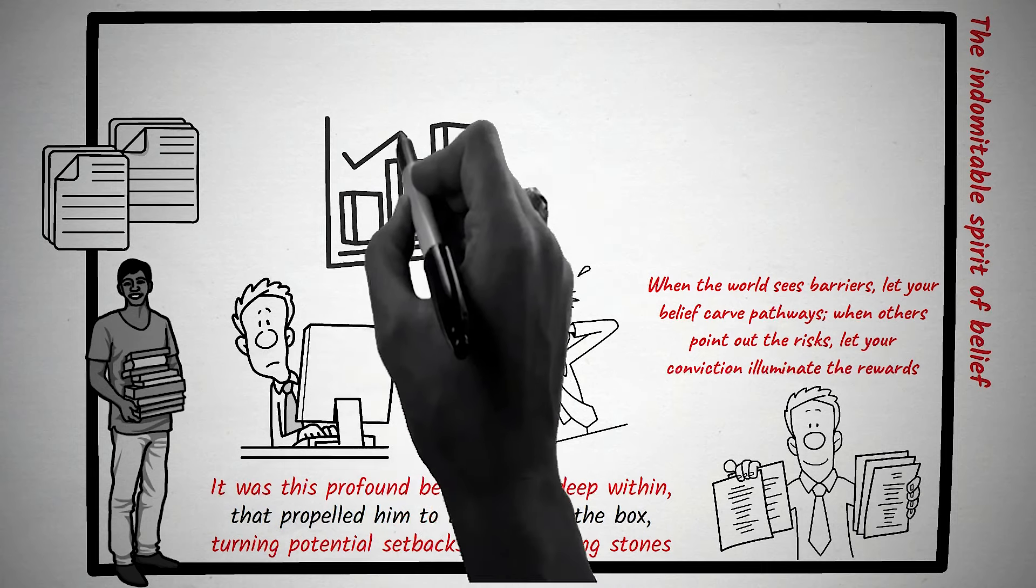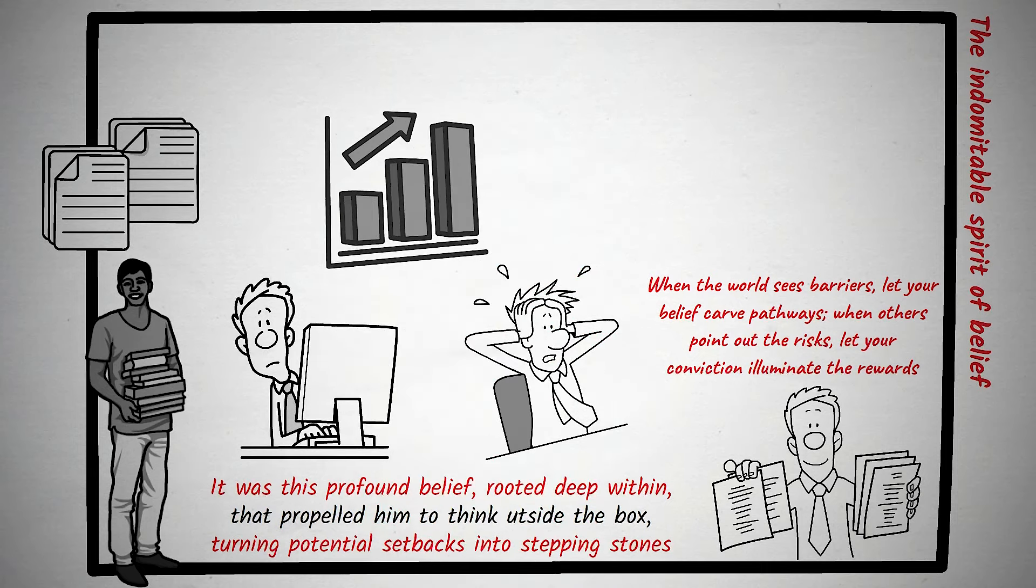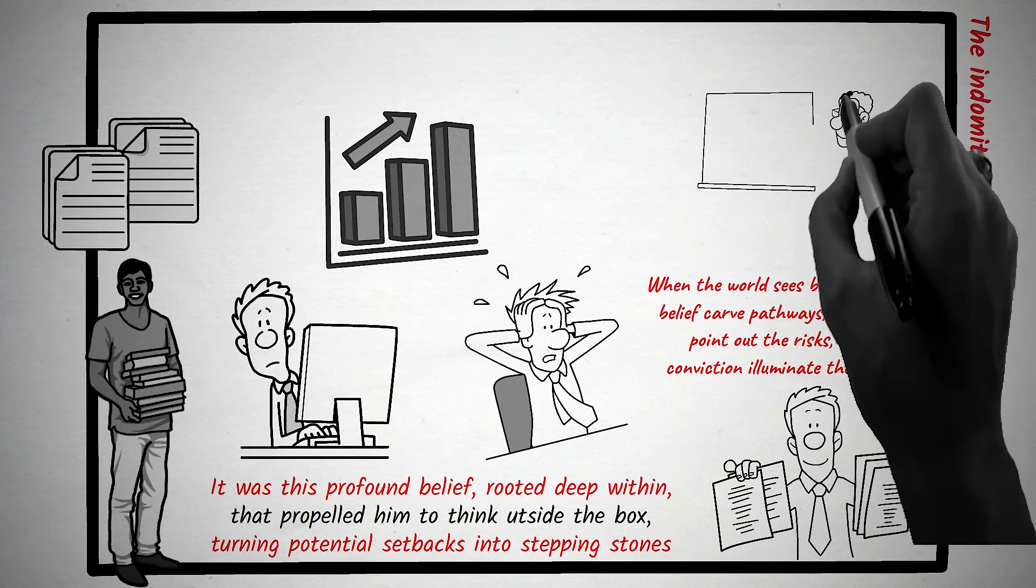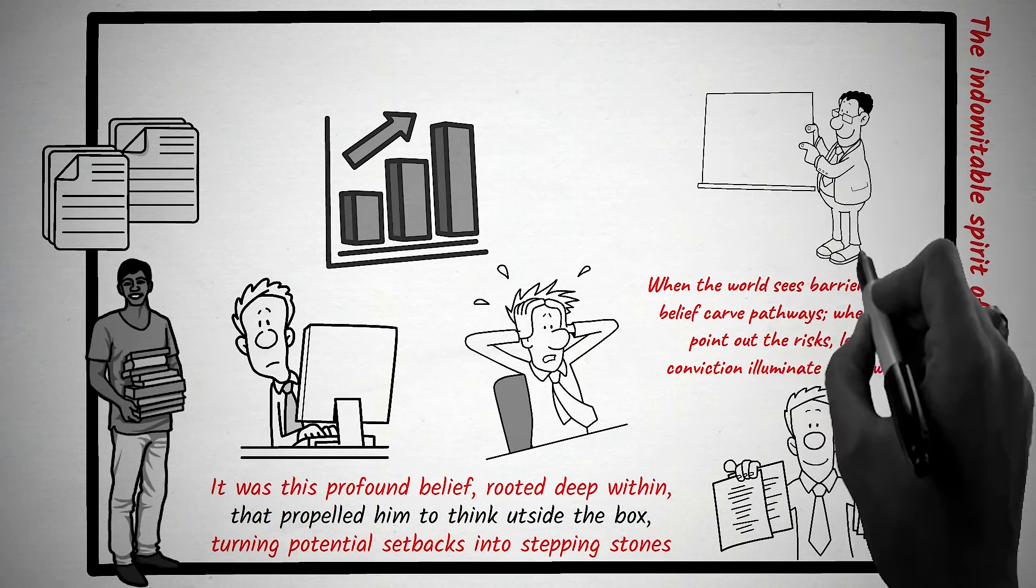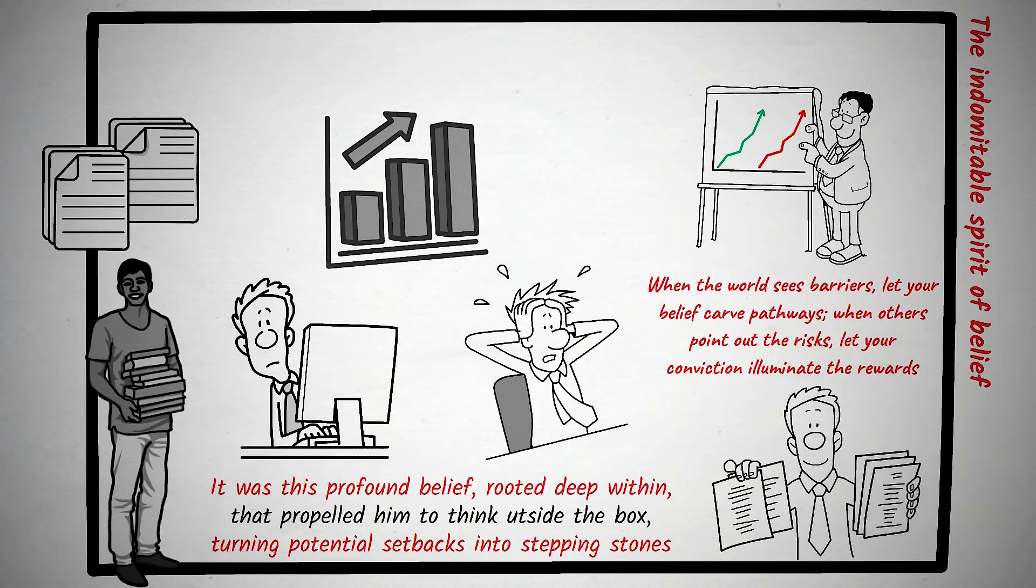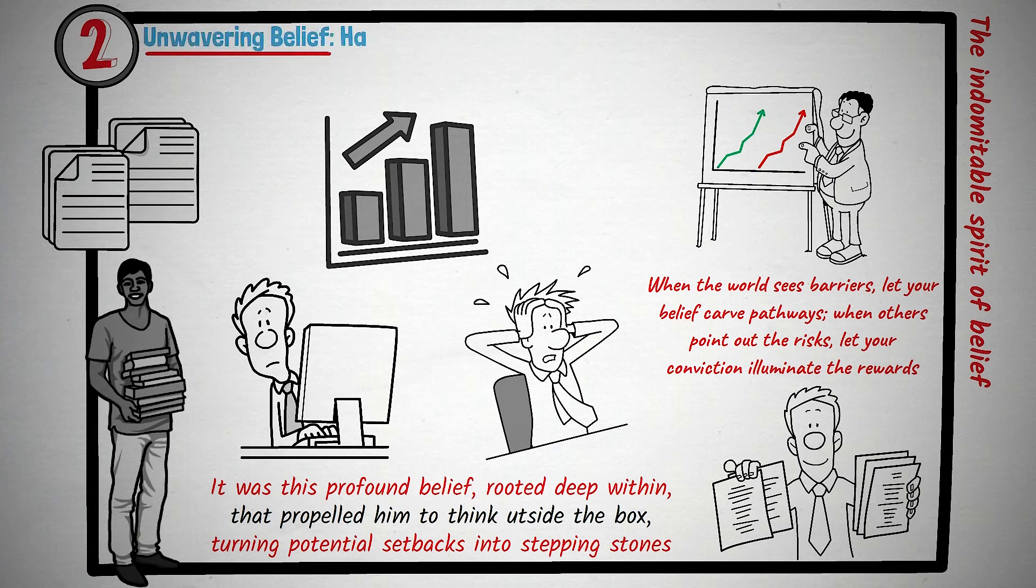As we navigate the intricacies of Think and Grow Rich, it becomes evident that the cornerstone of every success story is an unyielding belief in oneself. This isn't just about optimism—it's about an internal compass that remains steadfast even when the external world is in turmoil. And so, Principle Number Two is Unwavering Belief: have absolute faith in your abilities and vision. Self-belief can overcome many obstacles.